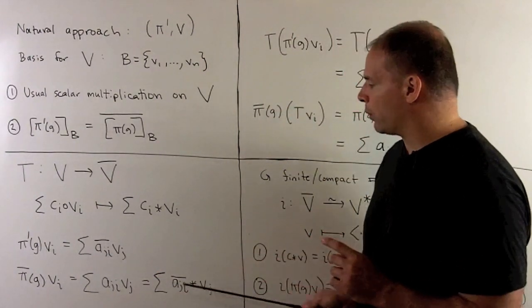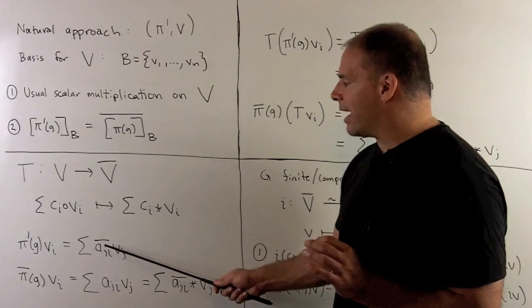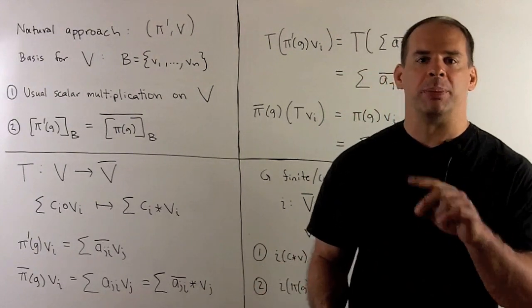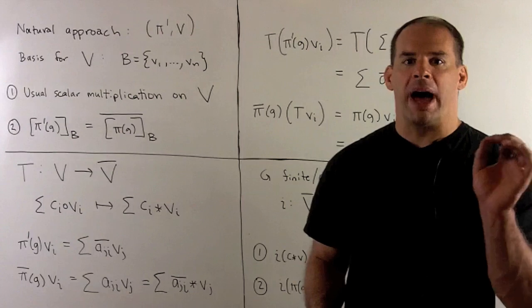Let's write our group actions in terms of our basis. These are straightforward. Here I have A sub J i, just going to be the entries for pi of G in our basis.